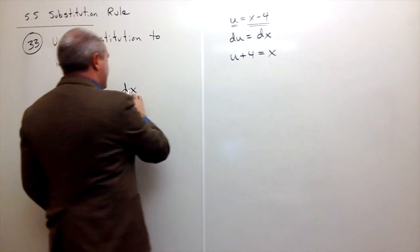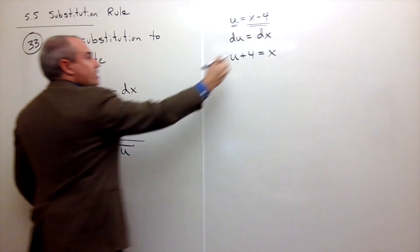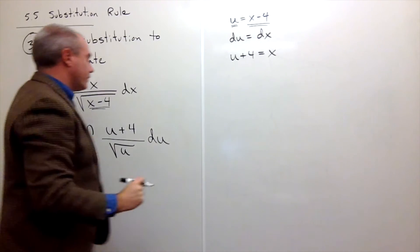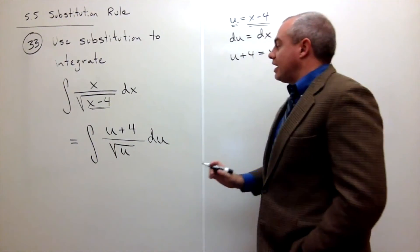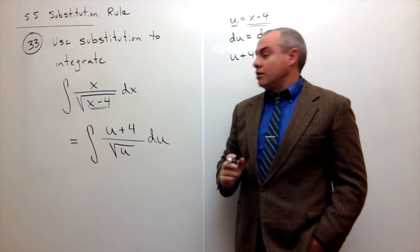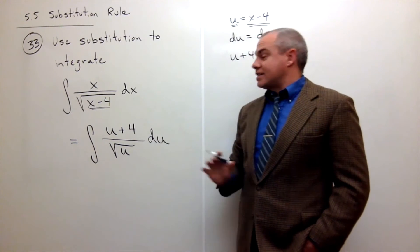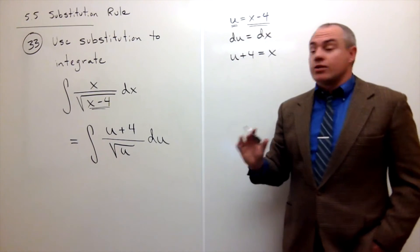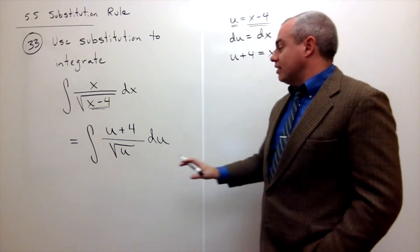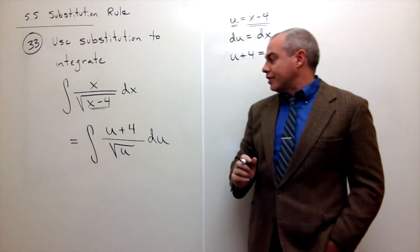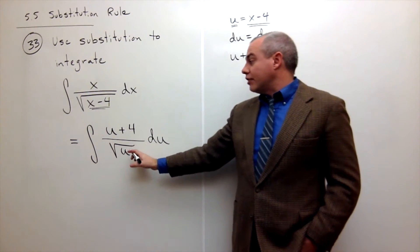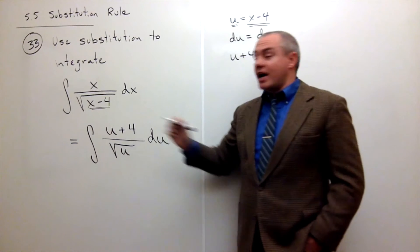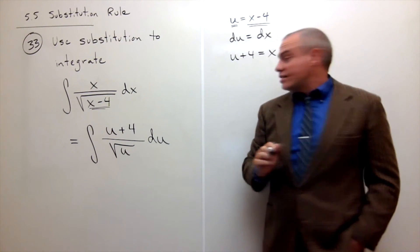And then I know that dx changes into du. So now I've rewritten my integral completely in terms of u. And I have no x's left, which is exactly what I want. So now we can simplify this a little bit before taking its antiderivative. It's not super clear right now, but I think if we break this up into two different fractions, it's much easier.